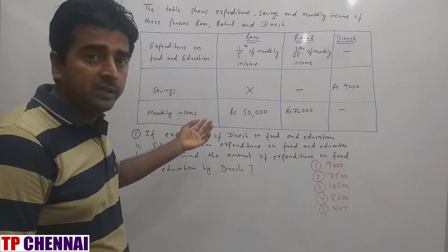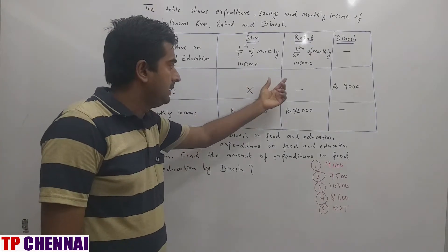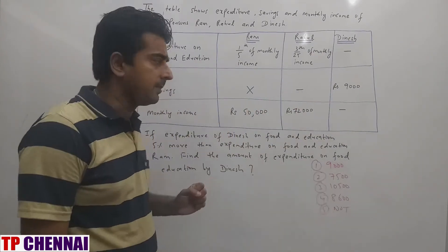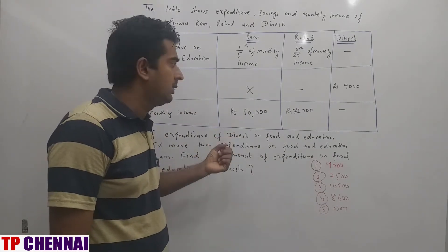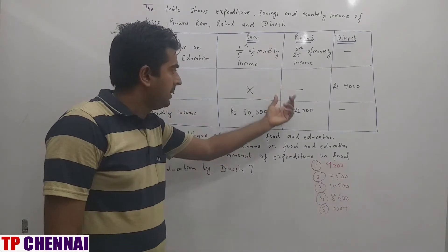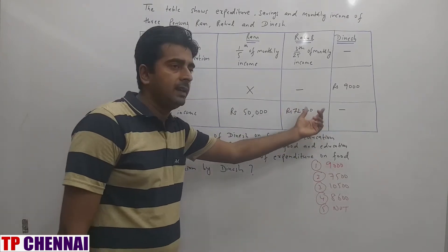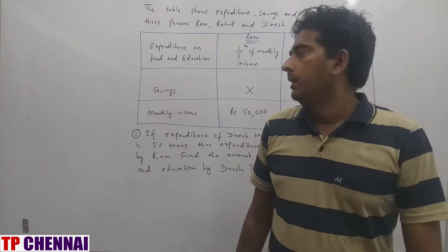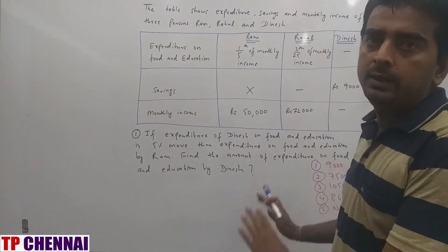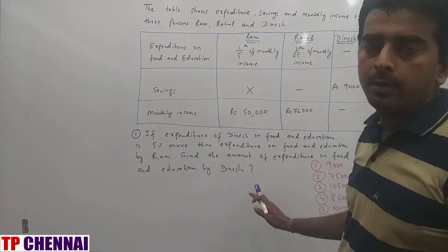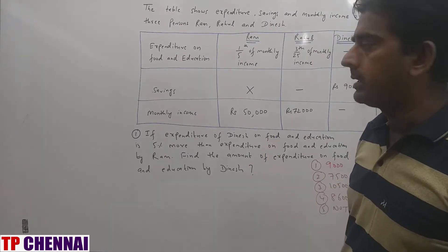Savings of Ram is X, Rahul's is a dash, and Dinesh's is 9,000. Monthly income of Ram is Rs. 50,000, monthly income of Rahul is 72,000, and monthly income of Dinesh is a dash. Based upon this table, they have asked 5 different questions.